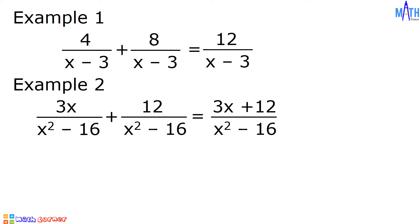Let us simplify the answer by factoring the numerator and the denominator. For 3x plus 12, the greatest common factor is equal to 3. Let us factor out 3, and to determine the other factor, let us divide 3x plus 12 by 3, which is equal to x plus 4. So the factors of 3x plus 12 are 3 and x plus 4.